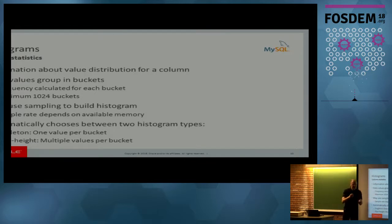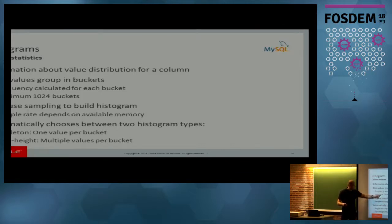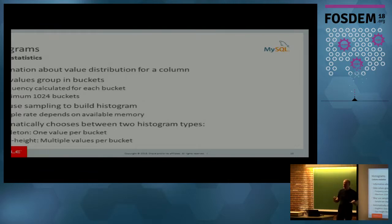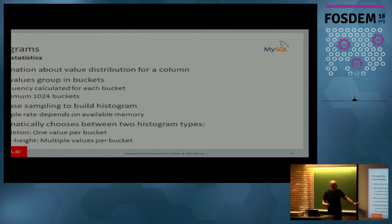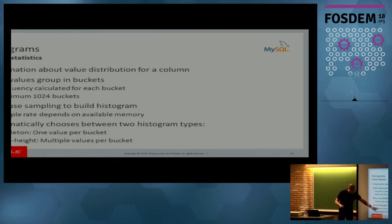For each bucket, you calculate the frequency of values in that bucket. When MySQL builds a histogram, it could base it on all rows of the table or on a sample, depending on the amount of memory reserved for creating the histogram. There are two histogram types, automatically chosen by MySQL: a singleton histogram, which has one value per bucket, and an equi-height histogram, which can have multiple values per bucket.